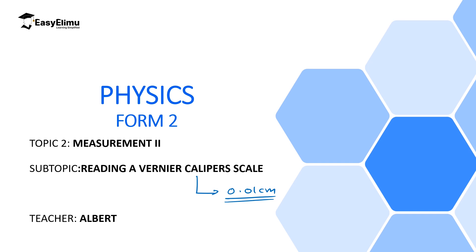We said the accuracy of this instrument is 0.01 centimeter — this is very important to remember. We also discussed how to read the two scales of this instrument. To read the main scale, you look at the value opposite and to the left of the zero mark of the Vernier scale. To read the Vernier scale, you read the value that coincides with the main scale and multiply it by the least count.